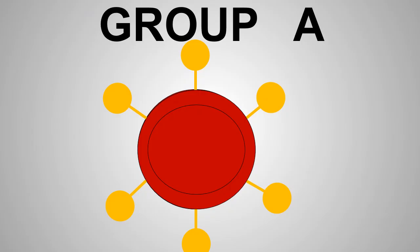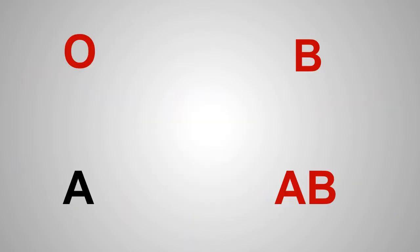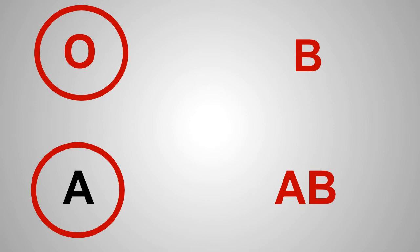Group A has A antigens and antibodies against B antigens. It means they can receive blood from people in group A or O, and they can give blood to people in group A or AB.